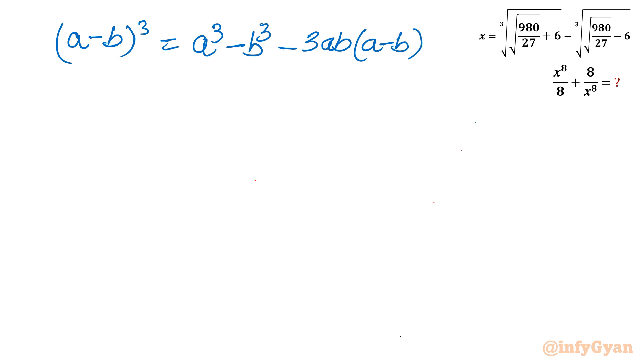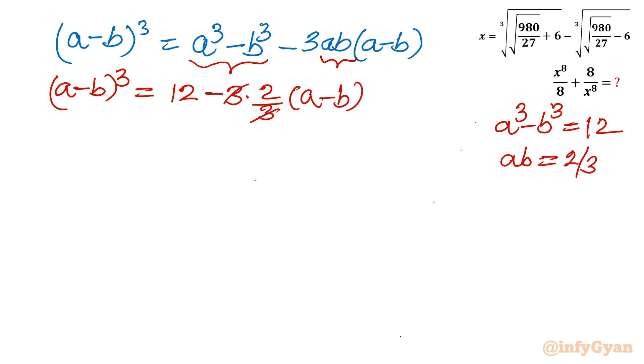This is one algebraic identity which we know already. Now let us write here the a cube minus b cube value, it was 12, and ab value it was 2 over 3. Let us apply here. So I will write a minus b whole cube equals a cube minus b cube which is 12, minus 3 times 2 over 3 times a minus b. 3 and 3 will cancel. Now it is a minus b whole cube equals 12 minus 2 times a minus b. Now you can see if we give a substitution then it would be good. So let us consider a minus b equal to t.